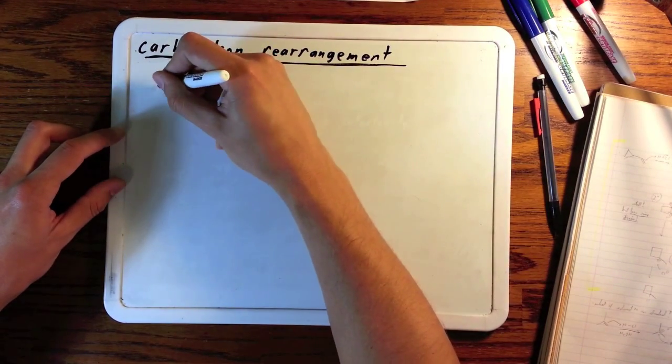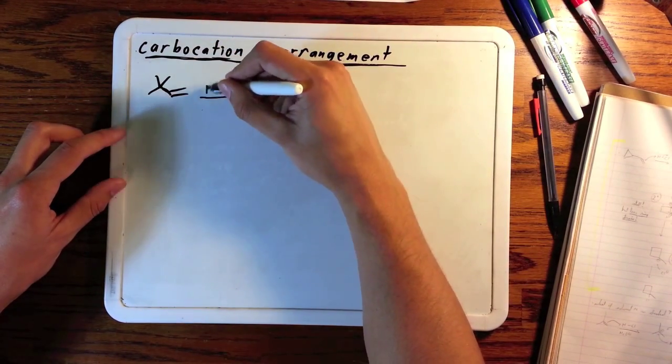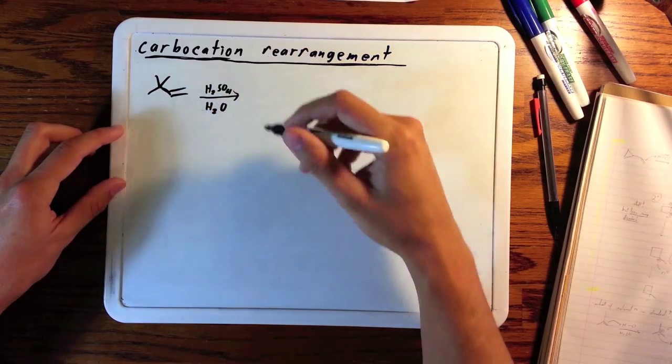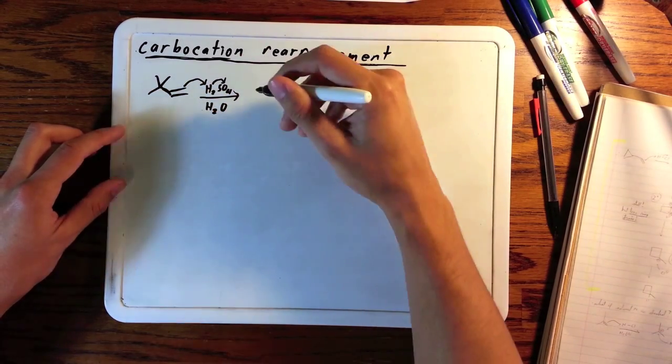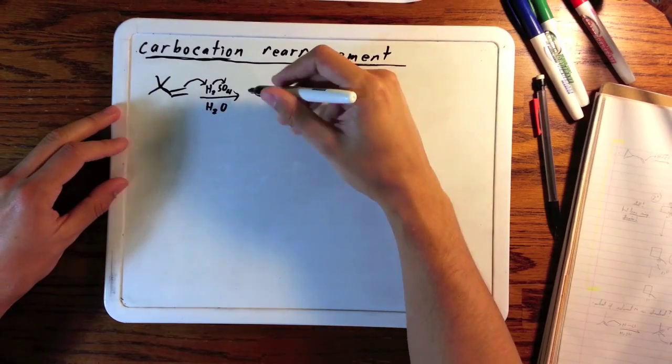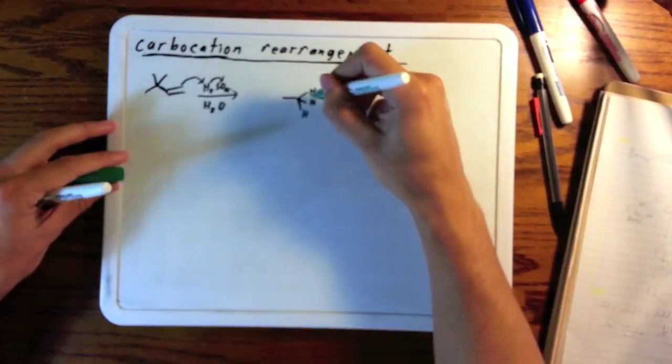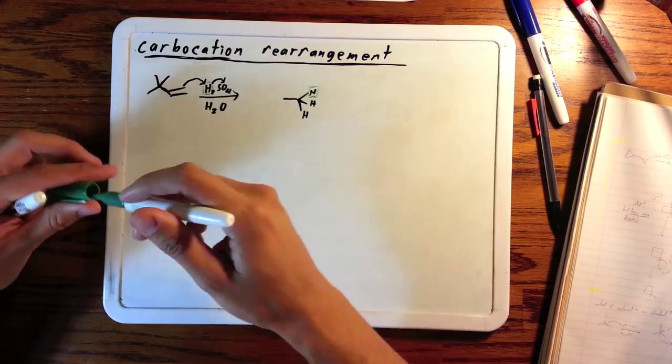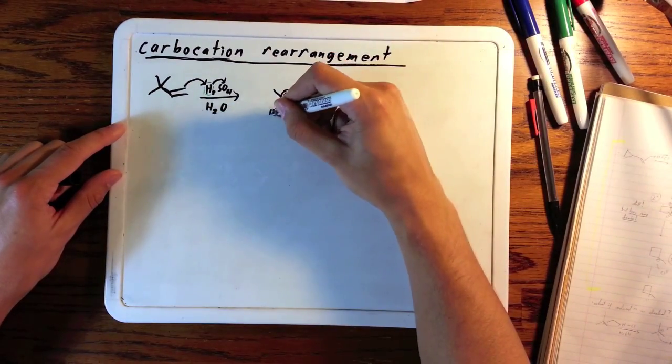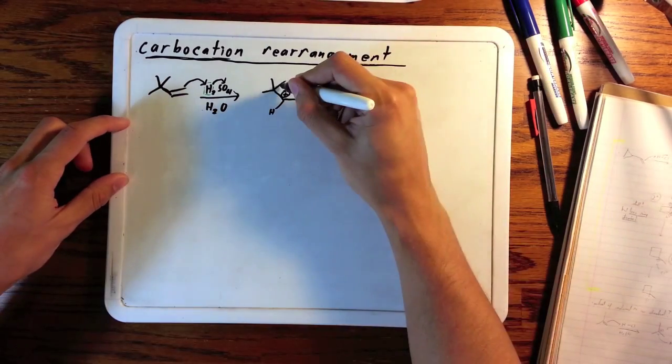Here's a full arrow pushing mechanism. We have our original alkene in sulfuric acid and water. We know what happens here - this is the beginning of hydration. The nucleophile is the alkene which attacks a proton from the sulfuric acid, which is probably on hydronium. Either way, it creates this carbocation.